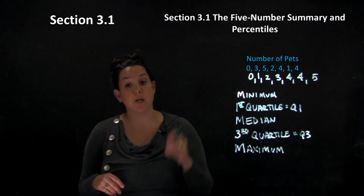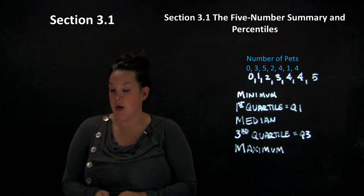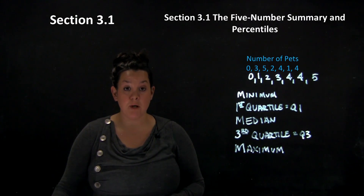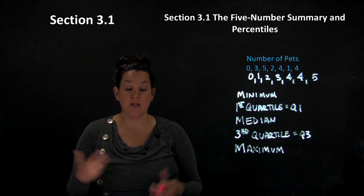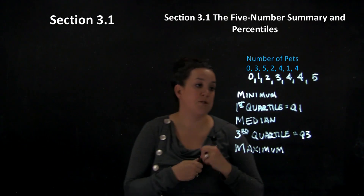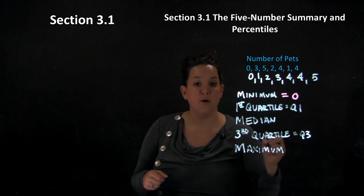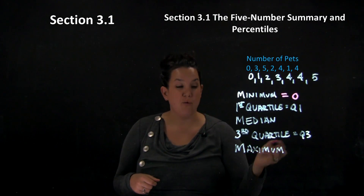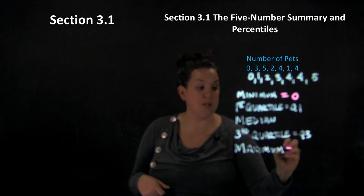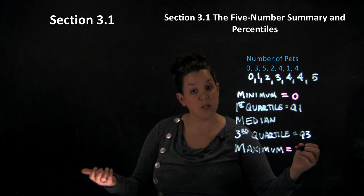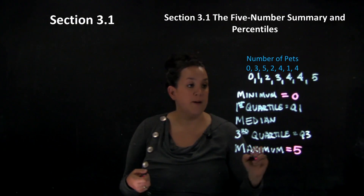Now we're going to look at how you would find them in the data set. The minimum is just as it sounds — it's going to be the smallest value. For our data set, the minimum would be zero. The maximum follows the same idea, but it's going to be the largest value, and that would be five.